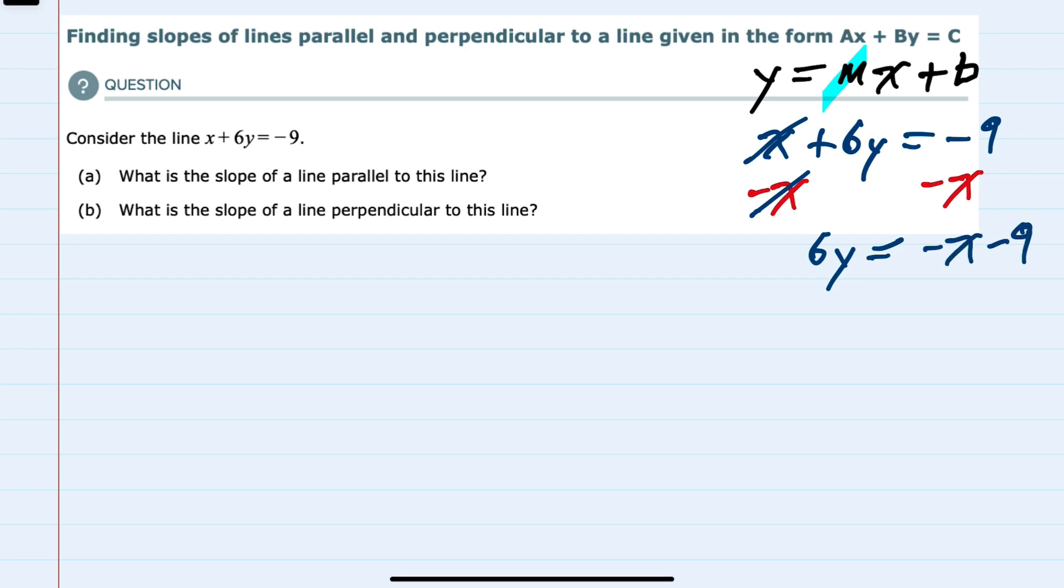Just writing the x term first to be consistent with y equals mx plus b. And then dividing each term on the left and right by 6 to solve for y, leaves me with y equals negative 1/6 x minus 3 halves. The important thing now is I can identify the slope of this equation as negative 1/6.